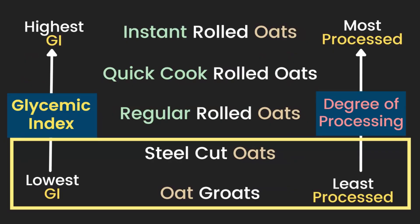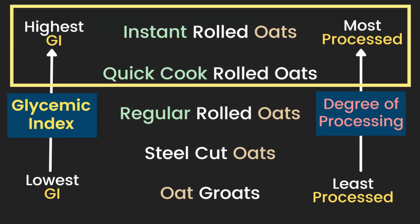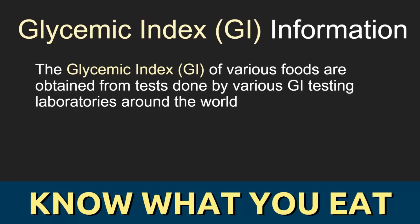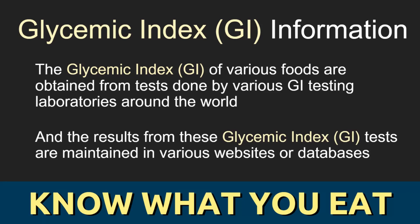In general, the less processed types of oats such as oat groats and steel cut oats would generally have a lower GI than the more highly processed types of oats such as quick cooked oats or instant oats. With the less processed oats such as steel cut oats having a GI in the high 40s to low 50s range, and the more highly processed instant oats having a glycemic index in the 70s or higher range. The glycemic index of various foods can be obtained from tests done for commercial or scientific research purposes at various GI testing laboratories around the world. If you want to know the glycemic index of any foods, you can get them from various websites or online databases that collate the results of all these GI tests.